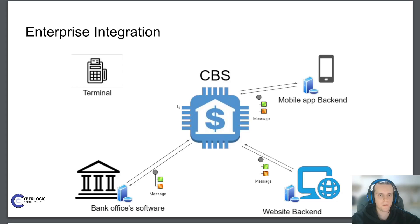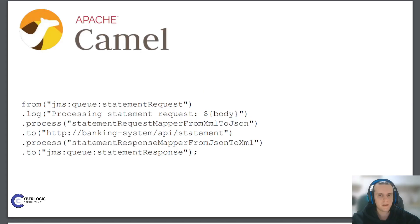Apache Camel was created to solve exactly this kind of problem — integration. It is an open-source Java framework designed specifically for building integration solutions. It allows developers to set up integrations that connect systems, convert data formats, perform transformations, handle errors and logging, and handle different communication protocols like HTTP, JMS, and many others.